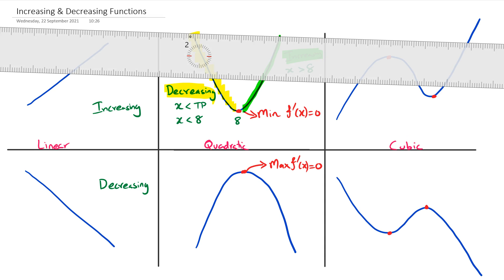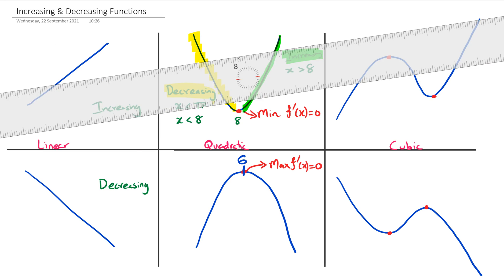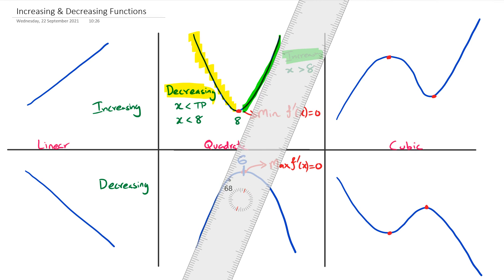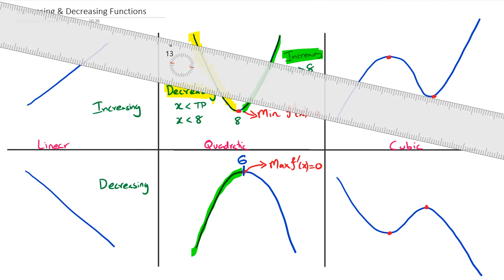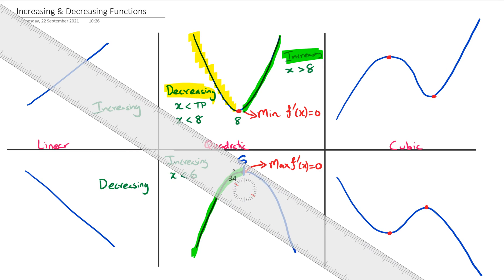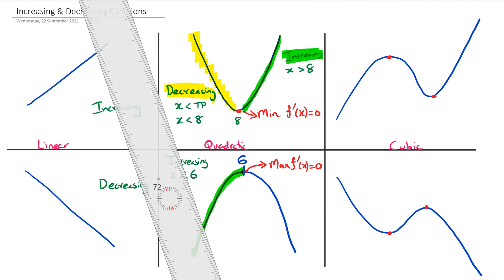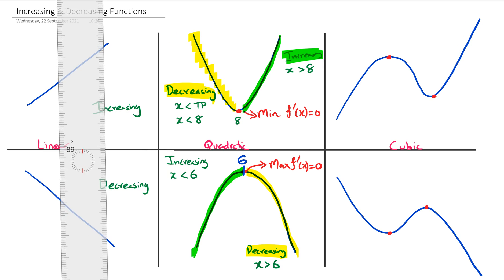Looking at the quadratic below — the negative parabola — we've got a turning point. Let's put this point as 6. If we take our ruler and put it before 6, we can see it's always pointing up, so it is increasing when x is less than 6. If we take the ruler after 6, the ruler is pointing down, so it is decreasing after 6 — decreasing for x greater than 6.